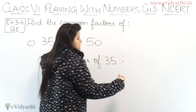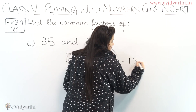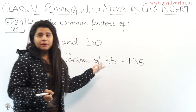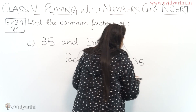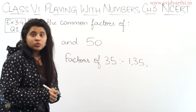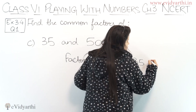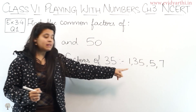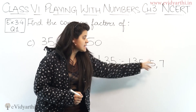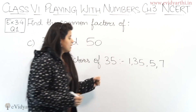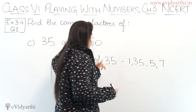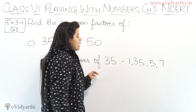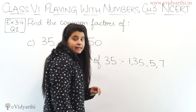What are the factors of 35? First, the factors are 1 and 35, because 1 is always a common factor and 35 is the number itself. Then 2 and 3 are not factors. But 5 into 7 is 35, so 5 is a factor and 7 is also a factor. So the factors of 35 are 1, 35, 5, and 7.